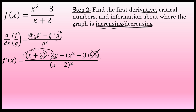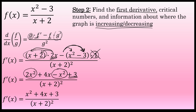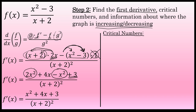To simplify this derivative, I'll distribute 2x and distribute the negative through the quantity x squared minus 3. That yields 2x squared plus 4x minus x squared, and the last term is plus 3, since distributing a negative to negative 3 gives plus 3. Combining like terms, the first derivative is x squared plus 4x plus 3, all over x plus 2 squared. The first derivative can be used to find critical numbers — x values where the graph could possibly change from increasing to decreasing.